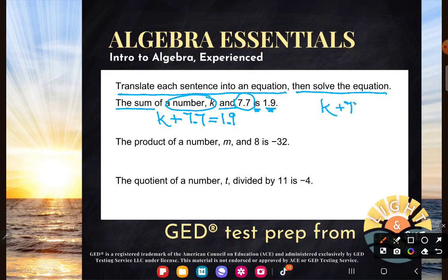So K plus 7.7 equals 1.9. All right. To solve this, I want to get K alone. It's not alone right now. It has that 7.7 hanging out. It's adding. So I will do the opposite. I'll subtract to get rid of it.